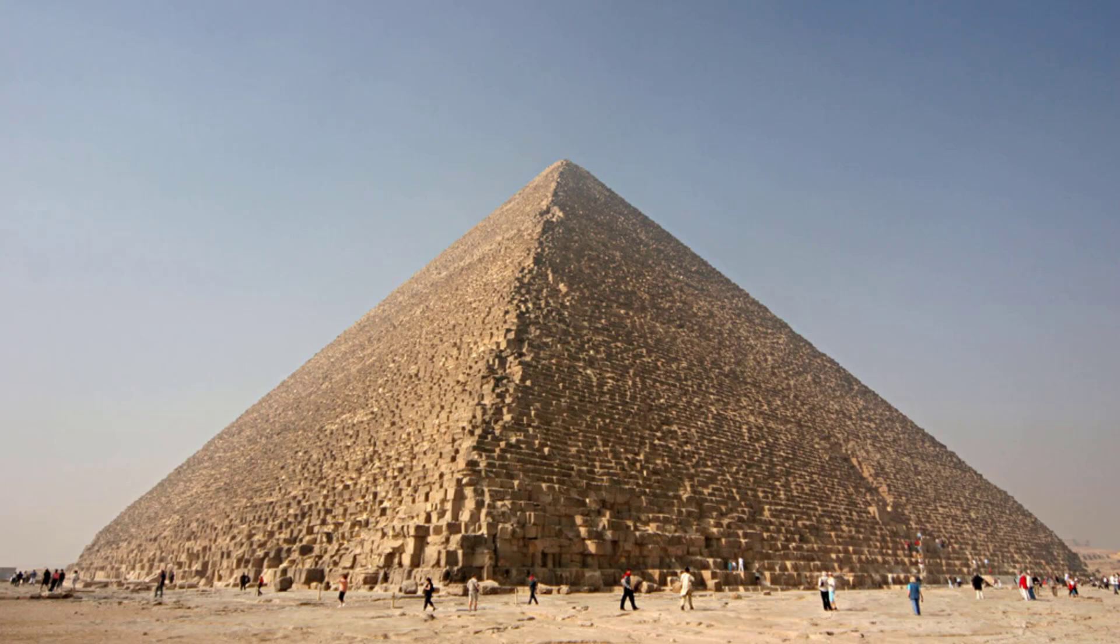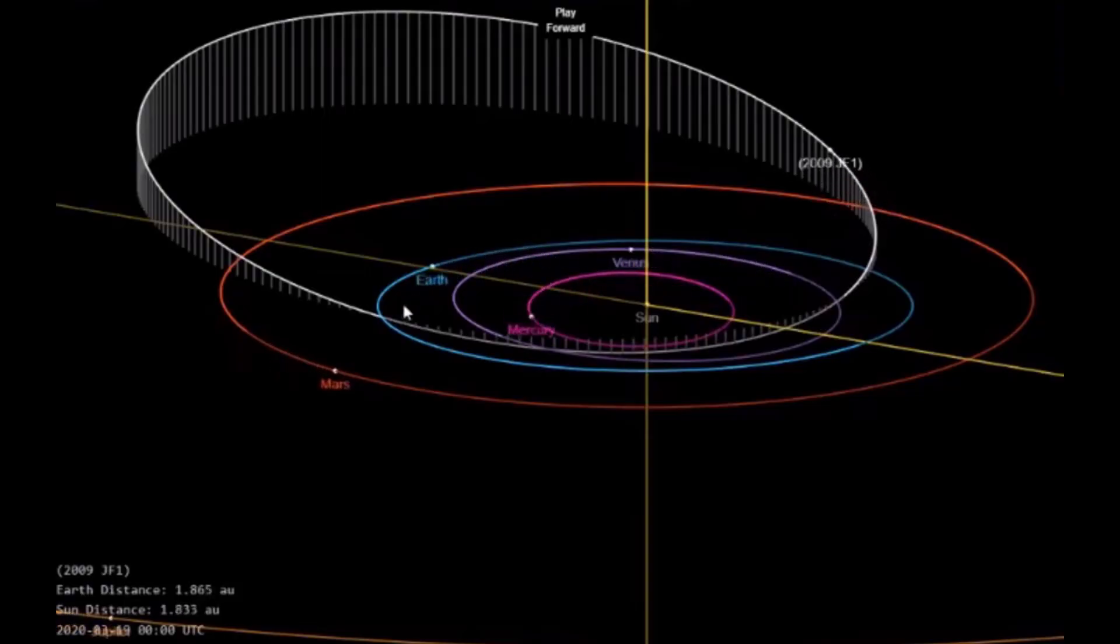At its current trajectory, JF1 would do a flyby of Earth on May 6, 2022. There is a 1 in 3,800 chance the asteroid will hit Earth on that day, according to NASA.